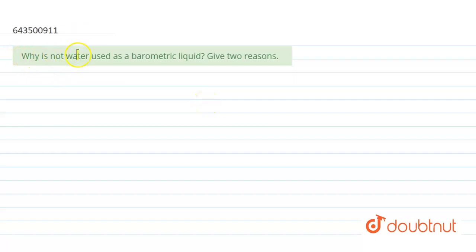The question asks: Why is not water used as a barometric liquid? Give two reasons. So we will first write them one by one and then understand.